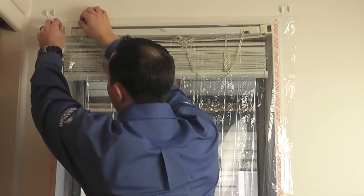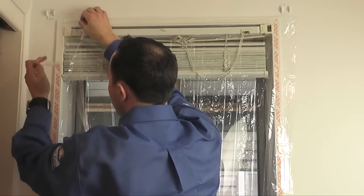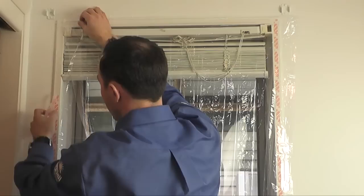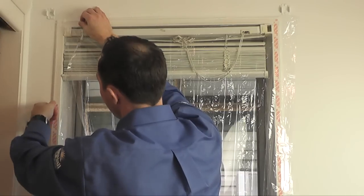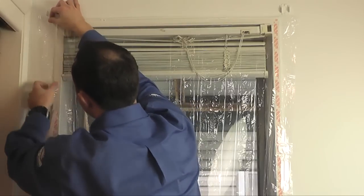Next, move to the sides. Remove the backing of the tape part way down one side of your window. Firmly press the film down along the tape. Repeat this on the other side. By doing it in small sections, it keeps the film straight.